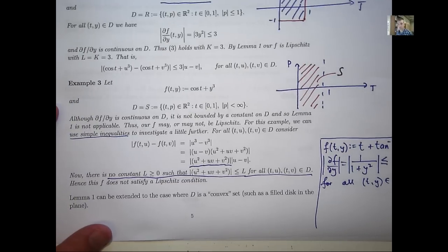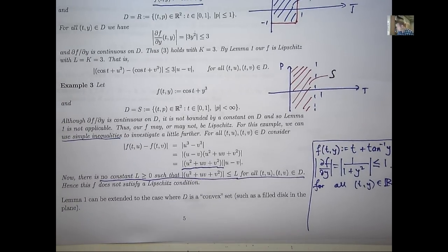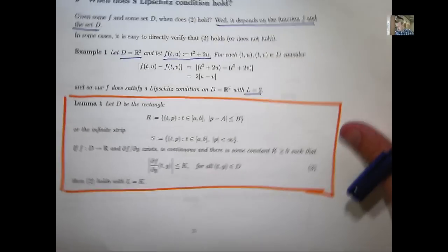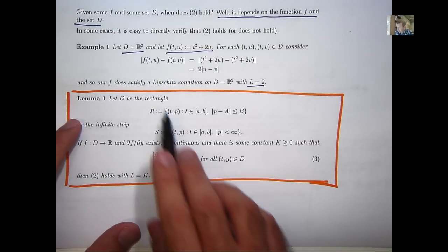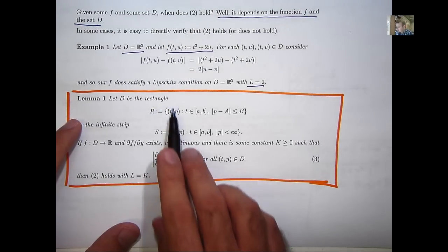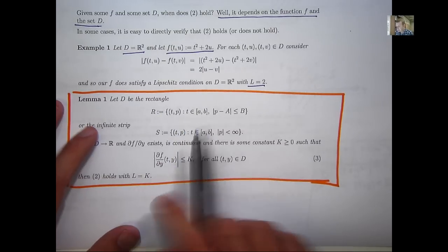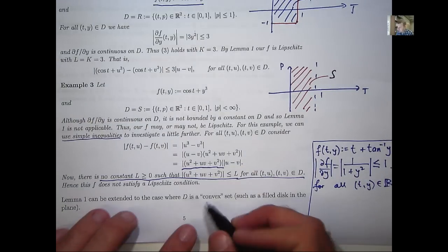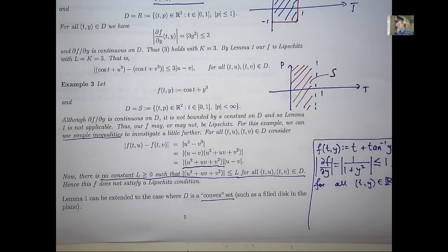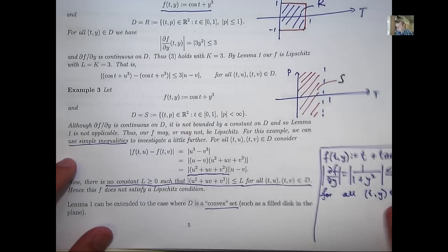Now, you can extend lemma 1 to generalizations of these sets. So, instead of having a rectangle or an infinite strip, you can have sets which are called convex sets. So, a set is a convex set. If you take two points in a set, draw a line between them, a straight line, and if that line stays in the set, then the set is convex.